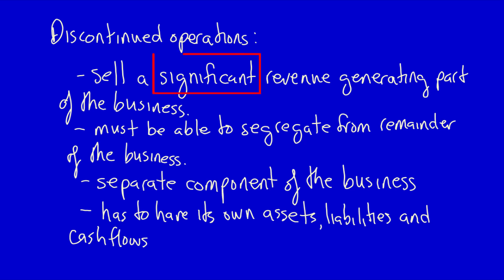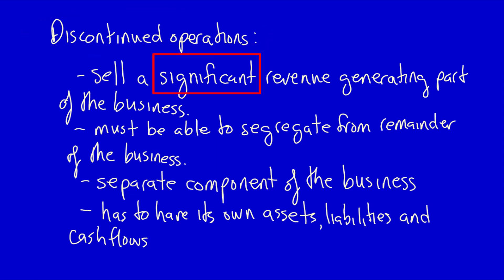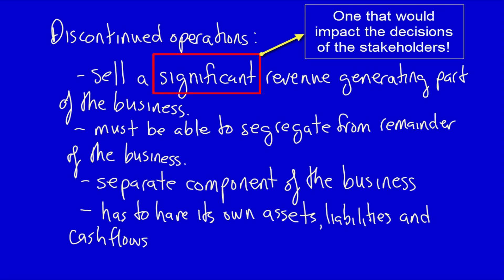Now, what does the phrase 'significant revenue-generating part of the business' mean? There is no definition in IFRS which indicates exactly what 'significant' or 'major' actually means. But this special category of discontinued operations shouldn't be cluttered with the disposal of a tiny line of the business — only the major or significant ones matter. Why? Because the discontinuance of a significant or major portion of the business would have a huge impact on the decisions of the stakeholders, and only those discontinued operations which would change the minds of stakeholders should be categorized as discontinued operations.